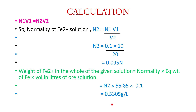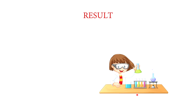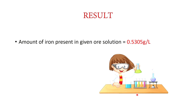We calculate: N2 × 55.85 × 0.1, giving us approximately 0.5305 grams. So the iron estimation result is: the amount of iron present in the given ore solution is 0.5305 grams.